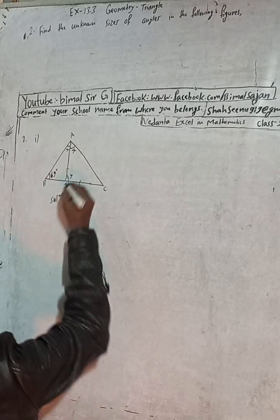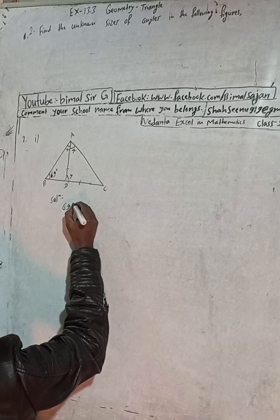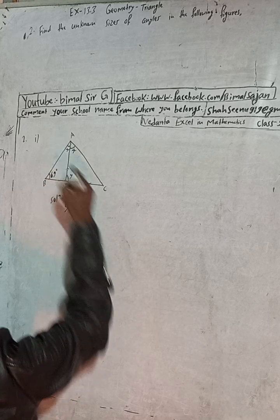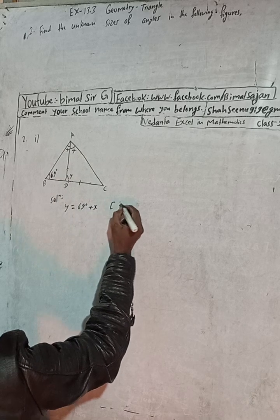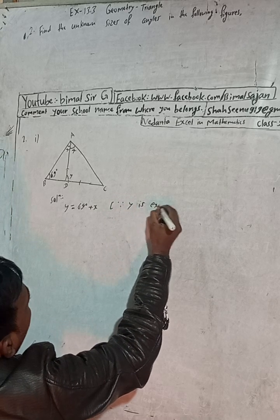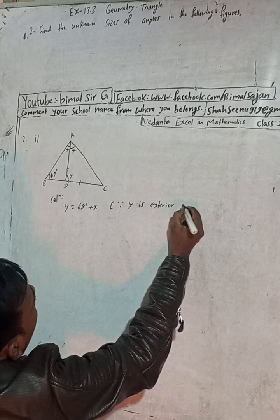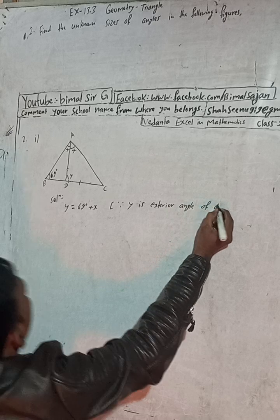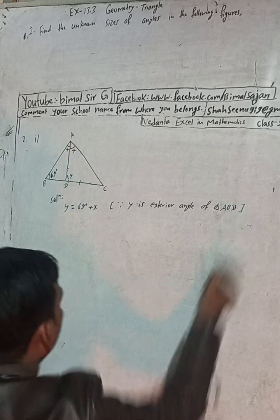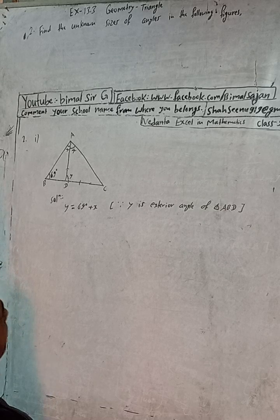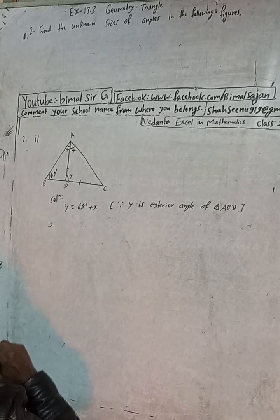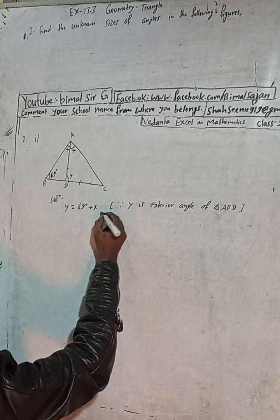We can write here: y is equal to 69 degrees plus x. The reason is that y is the exterior angle of triangle ABD. This is our Equation 1.